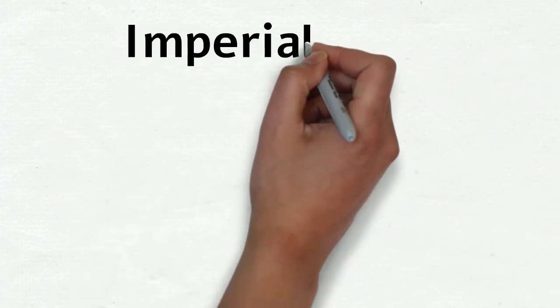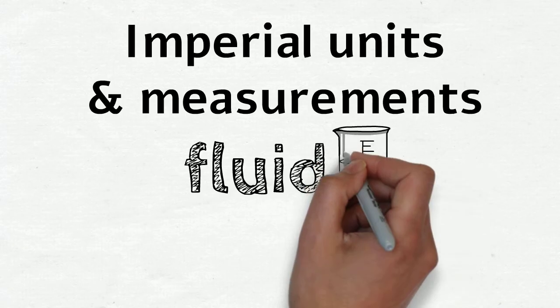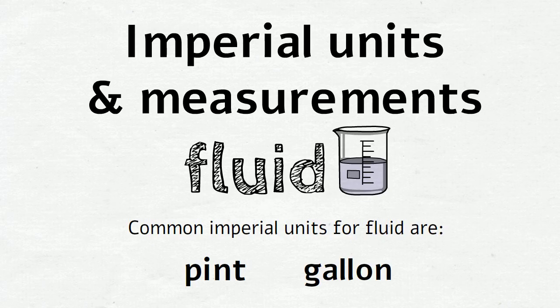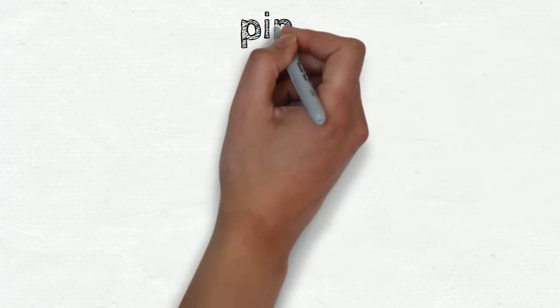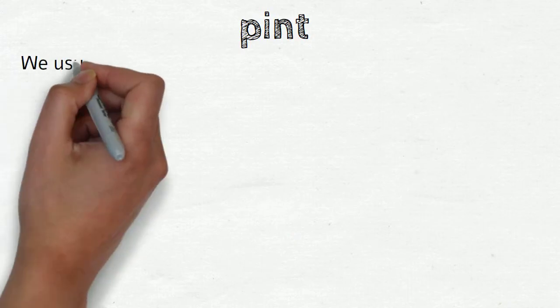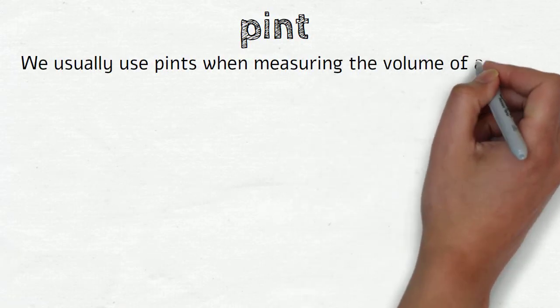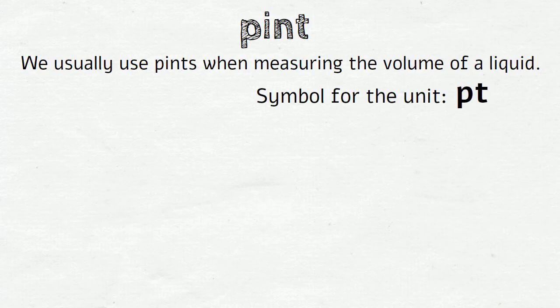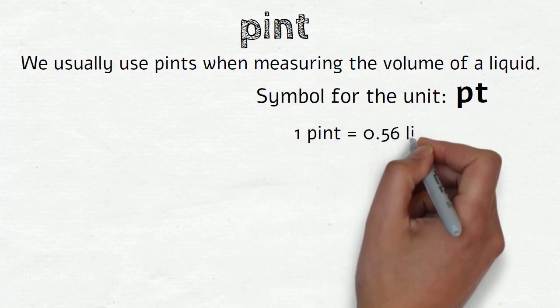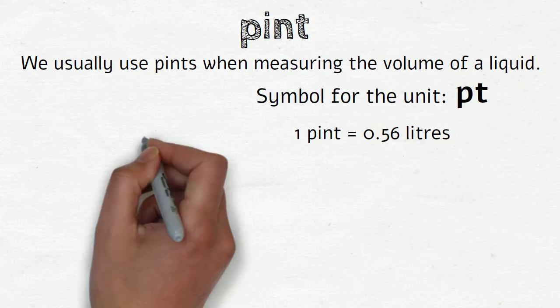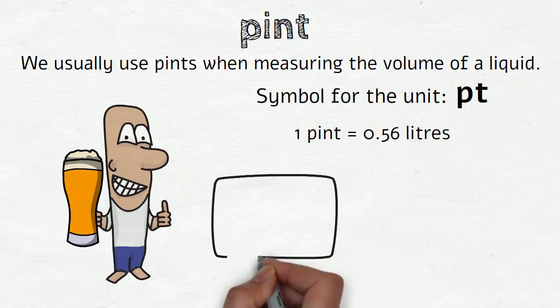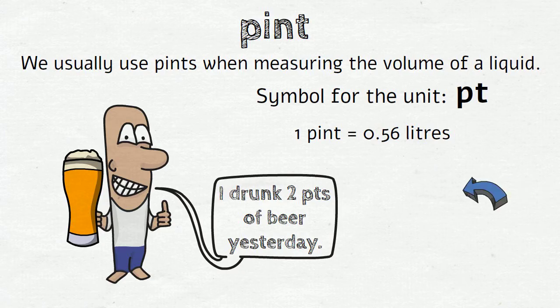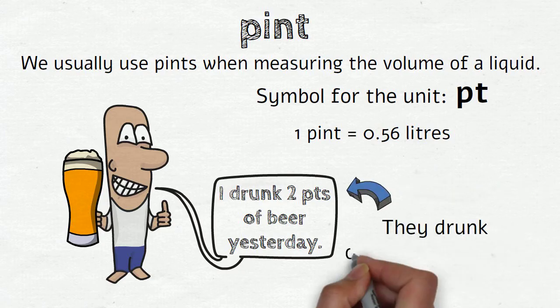Let's now move on to the imperial units and measurements for fluid. The common imperial units for fluid are pints and gallons. We'll start with a pint. We usually use pints when measuring the volume of a liquid. The symbol for the unit is pt. And 1 pint equals 0.56 liters in a metric system. So if someone says 'I drank 2 pints of beer yesterday,' it means that they drank over 1 liter of beer.